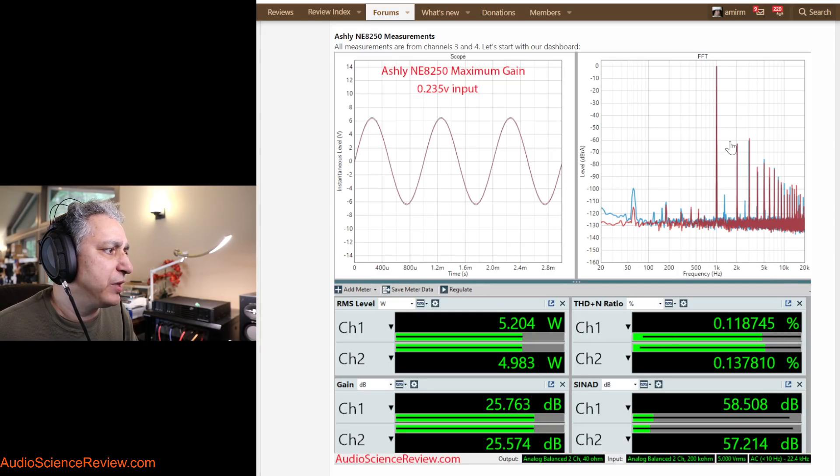The biggest issue with this amplifier, as you'll see throughout the measurements, is this high level of distortion. You can see that the spike is around minus 58 dB relative to our main tone. It's the third harmonic that's quite loud.